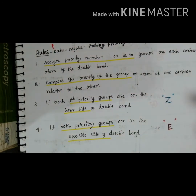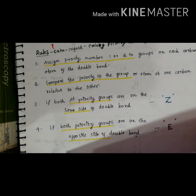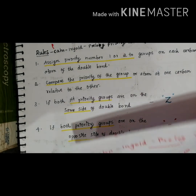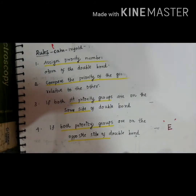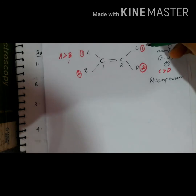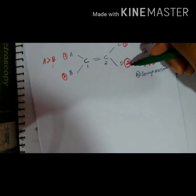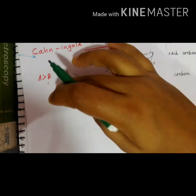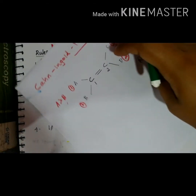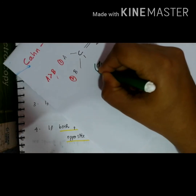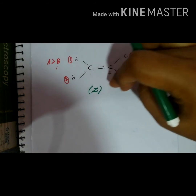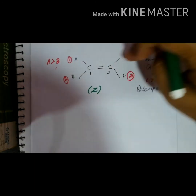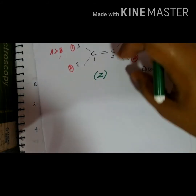Rules three and four are a combination. Rule three says: if both first-priority groups are on the same side of the double bond, then it is Z. That means both priority-1 groups are on the same side, and both priority-2 groups are on the same side. This is called Z. You can remember: Z means same side — priority groups on the same side means Z.